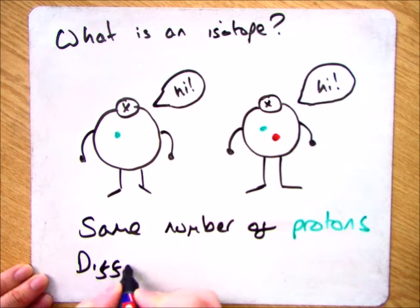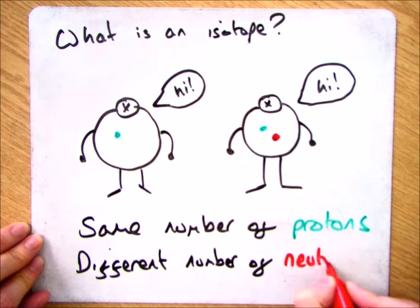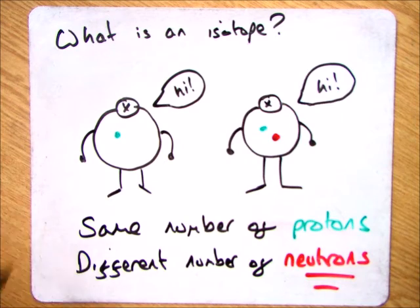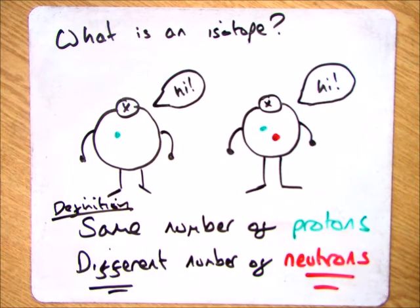We're not going to include electrons, we'll learn about that when we do ionic bonding. And then the thing that's different is the number of neutrons. So our definition is the same number of protons, different number of neutrons. What you need to do is learn that.